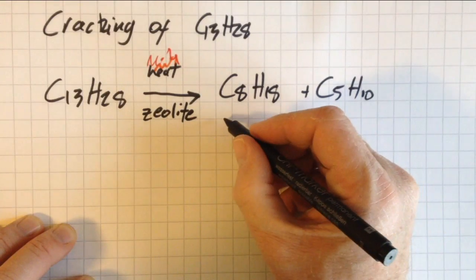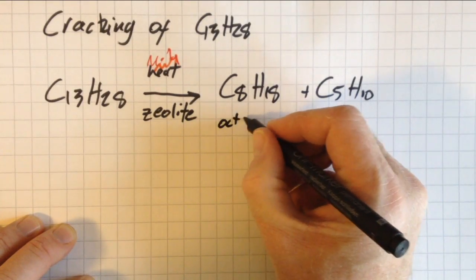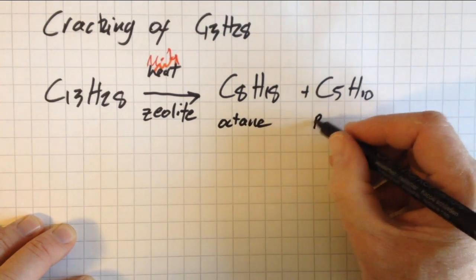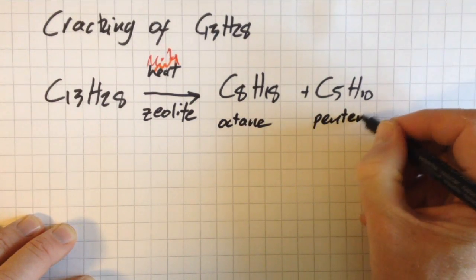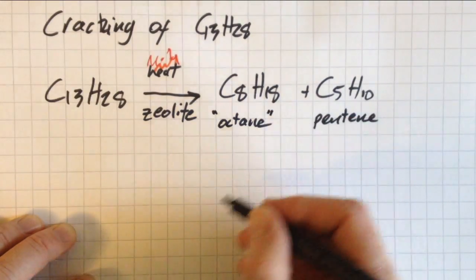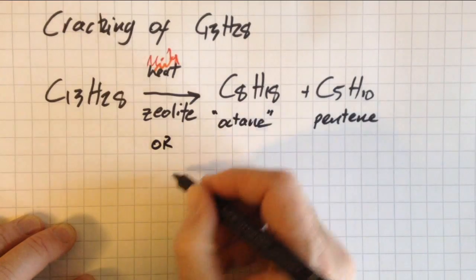Okay, so I've chosen to make octane, which may or may not be branched in this case, so a type of octane, an isomer of octane, and pentene. Now as long as those all add up left and the right, you've got a balanced equation and it's acceptable.